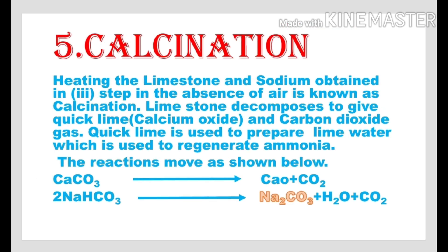The fifth step in the Solvay process is Calcination. Heating the Limestone and Sodium Bicarbonate obtained in the third step in the absence of air is known as Calcination. Limestone decomposes to give Quick Lime — that is, Calcium Oxide — and Carbon Dioxide gas. This Quick Lime is used to prepare Lime water, which is used to regenerate the Ammonia.